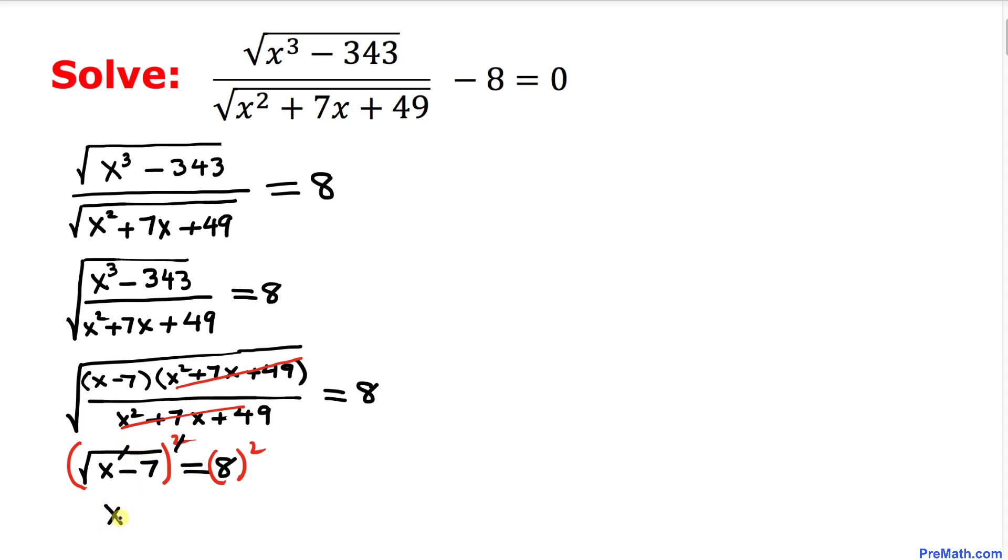We ended up with x - 7 equal to 64. Let's move this 7 to the other side, so we got x equal to 64 plus 7. That means our x value turns out to be 71.